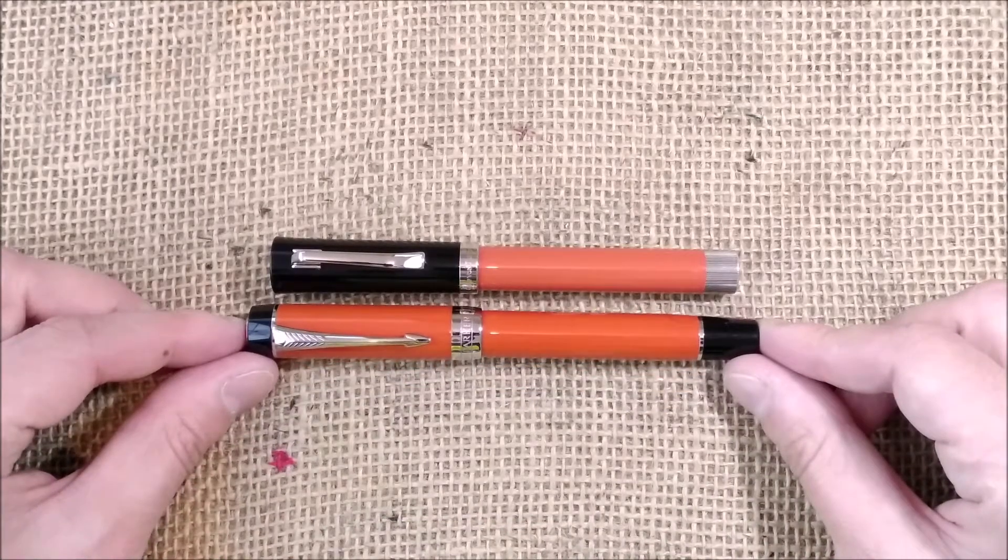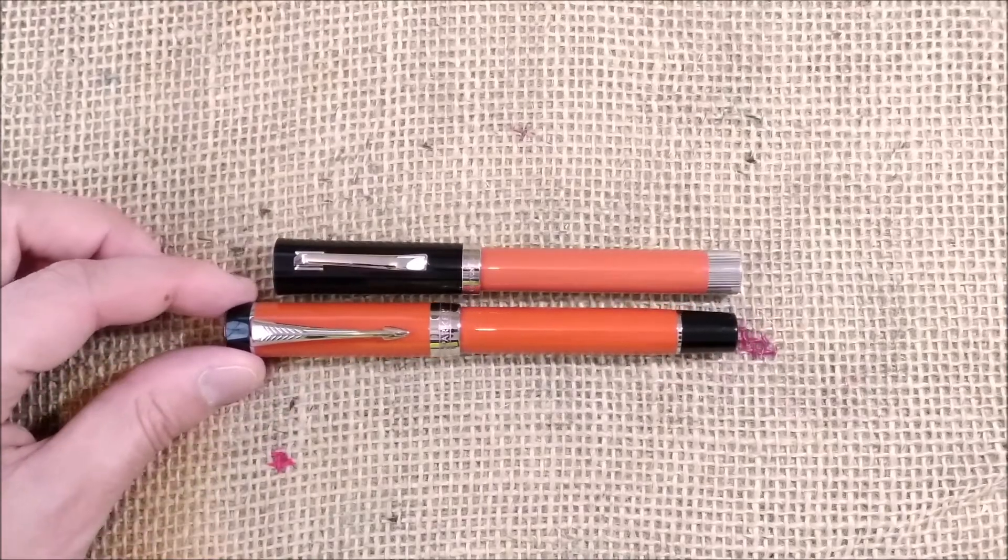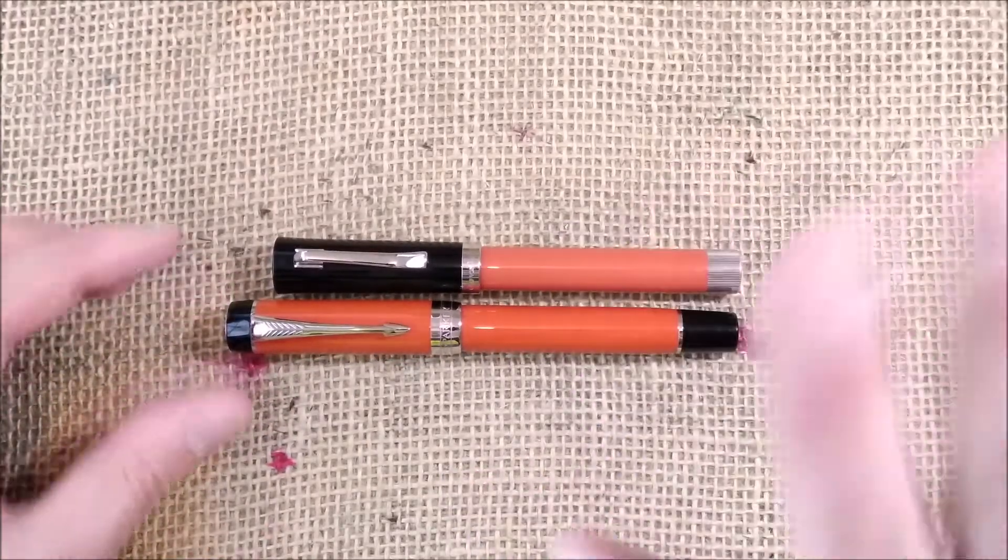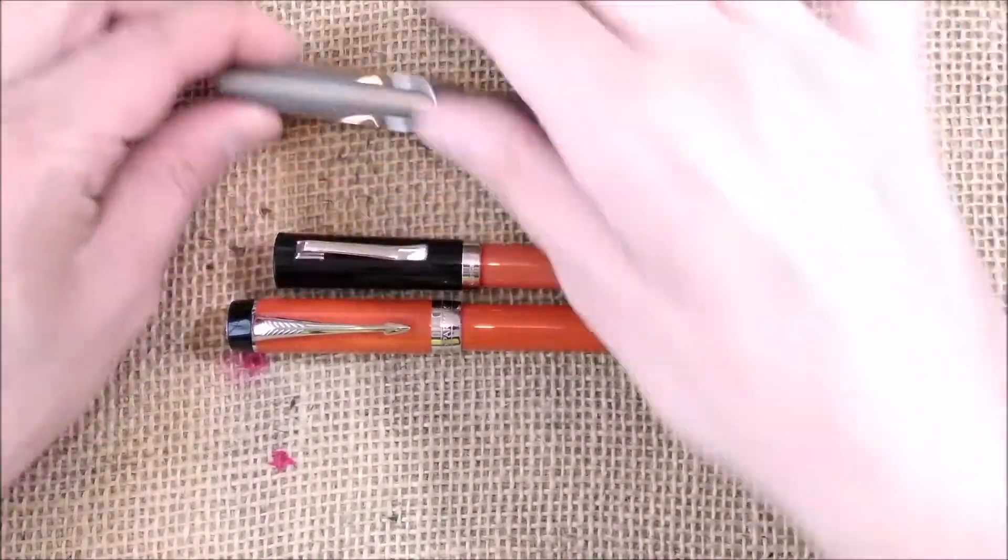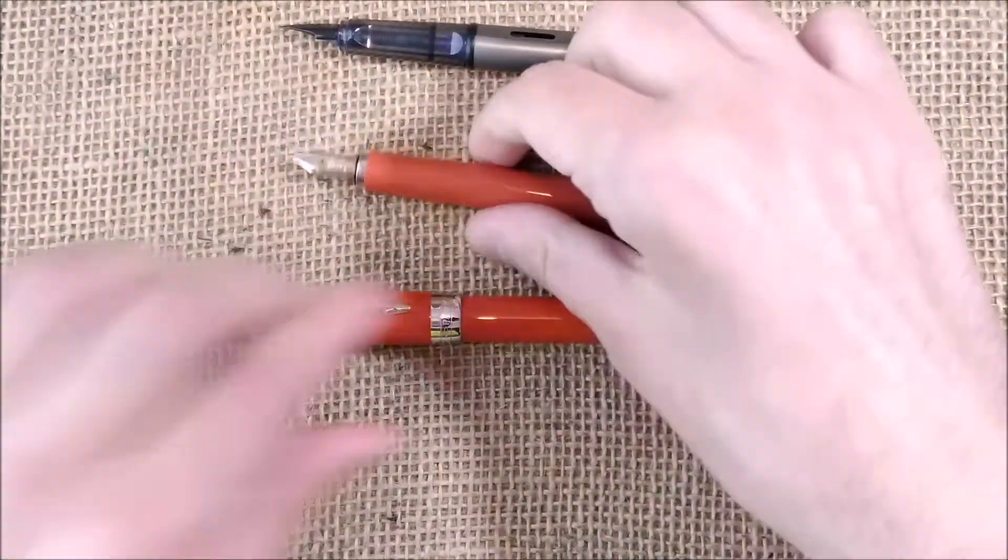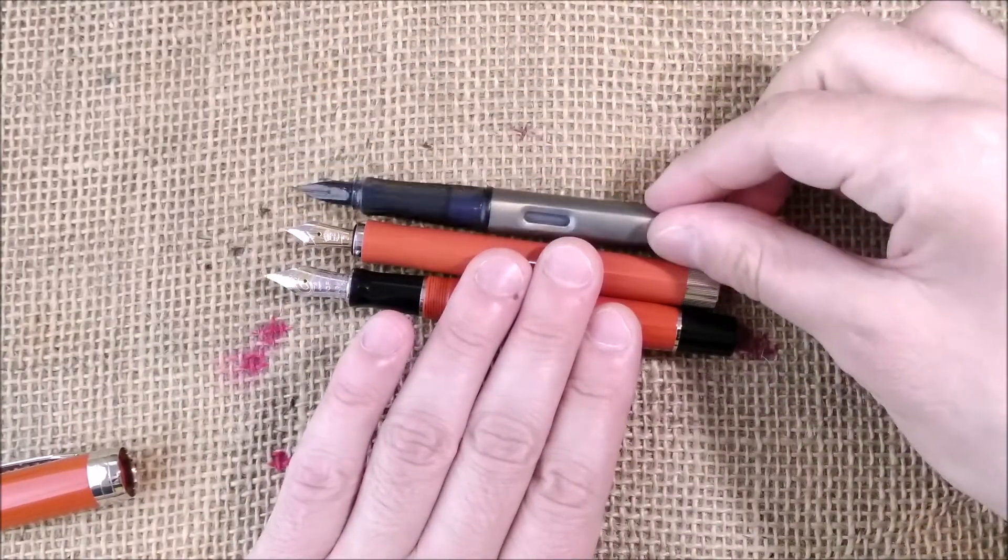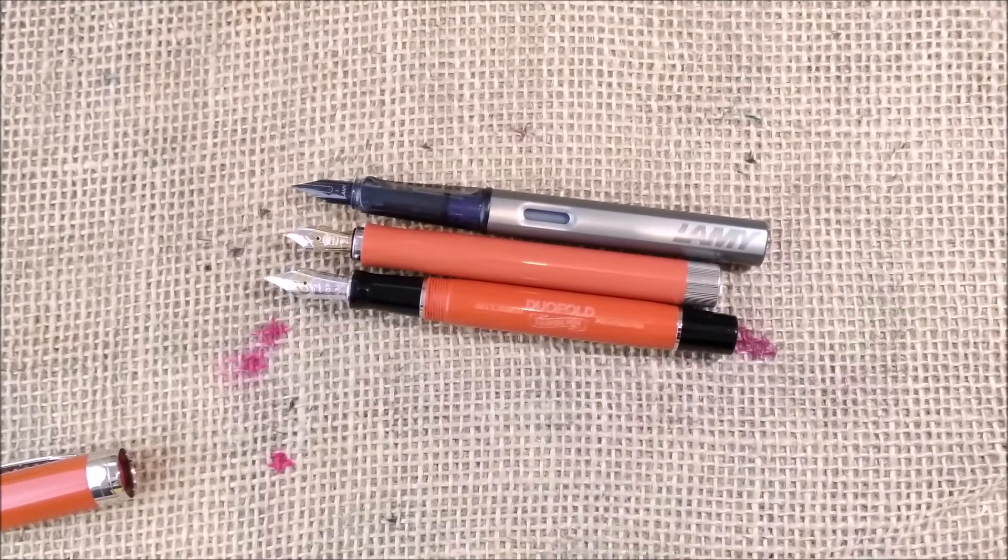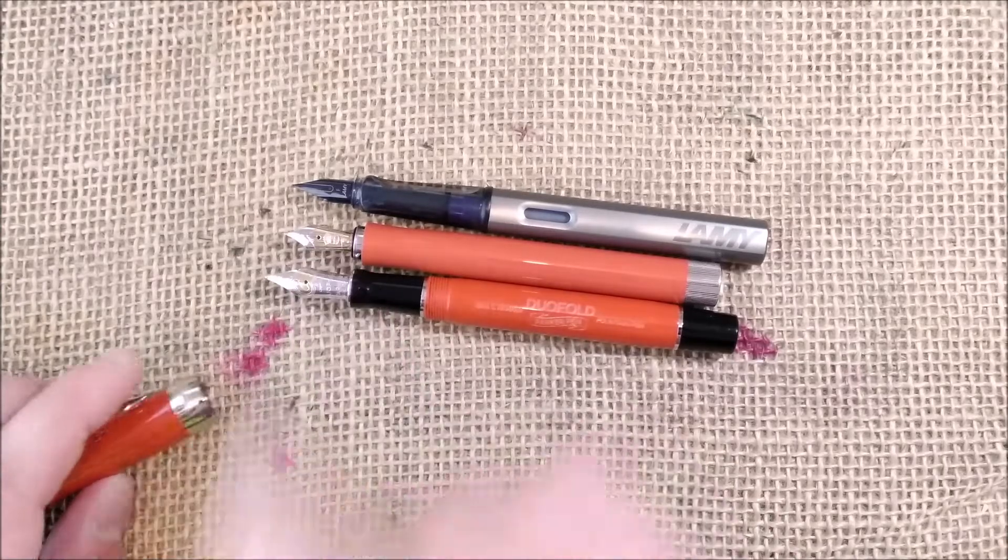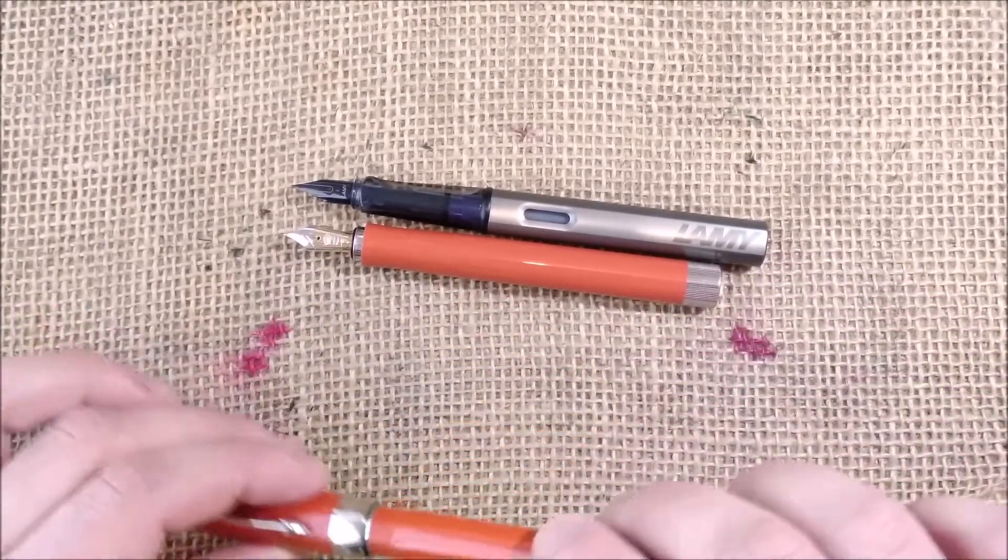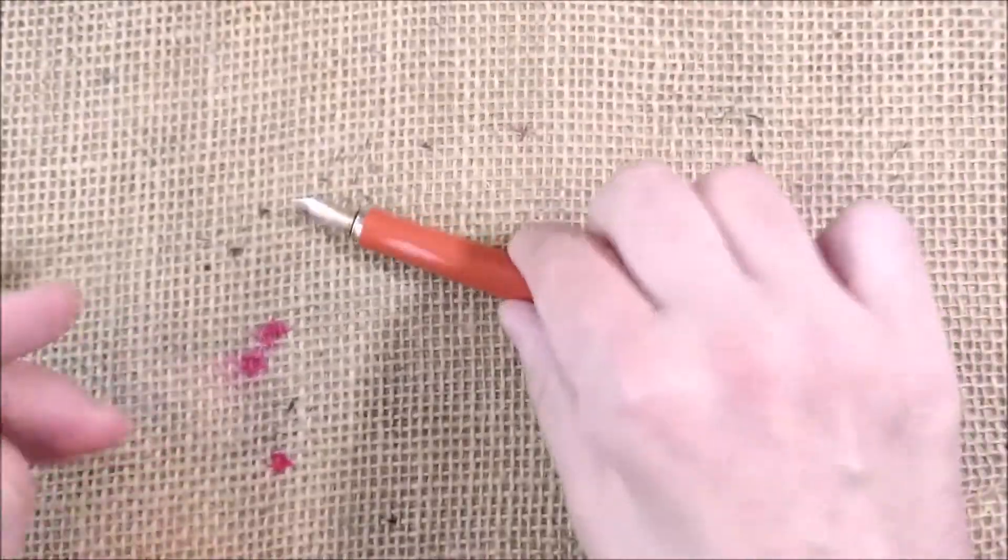Now let's compare it with our usual Parker Centennial Duofold Big Red, that is a bigger pen but the girth is almost the same, and the Lamy LX Ruthenium. When we uncap the three pens you will see that the Graf von Faber-Castell is the smallest one, no problem about that. But because of the girth I think the nib could be a number six nib. That is my opinion and it is one of the downsides of the pen.